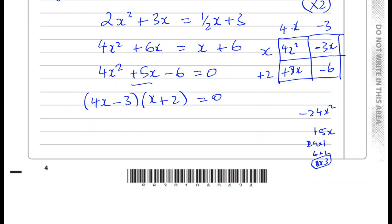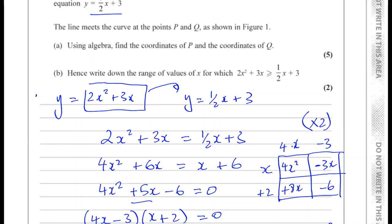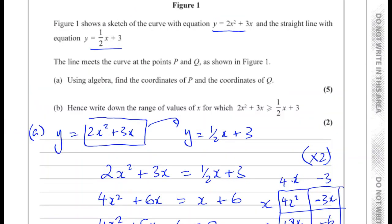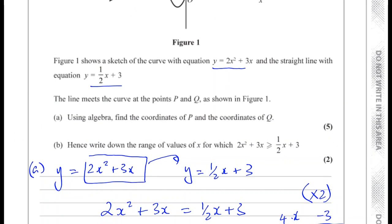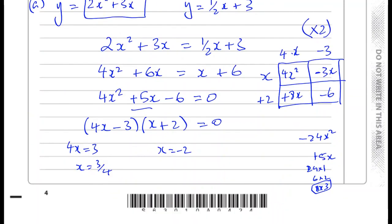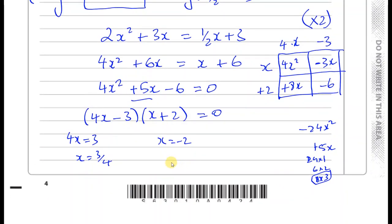So we're going to have either 4x equals 3, in which case x equals 3 quarters, or x equals minus 2. So we haven't quite finished yet. We're still on part A. We've got to find the coordinates of P and Q. Now P must be the one that has x as minus 2, and Q must be the one that has x as 3 quarters.